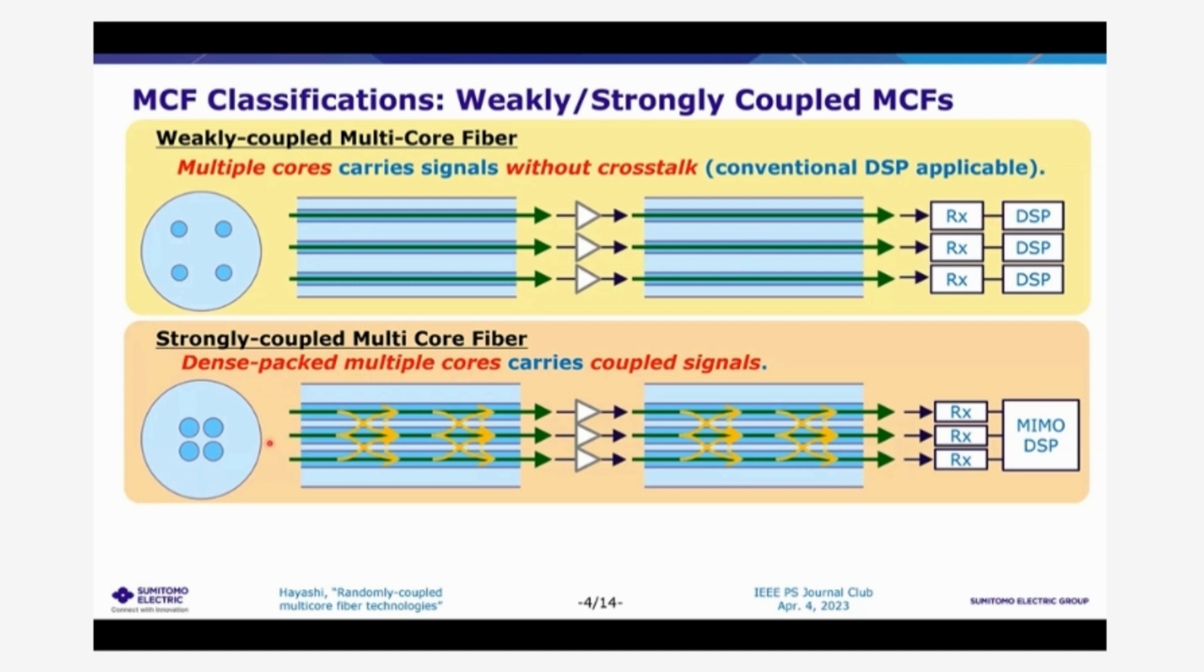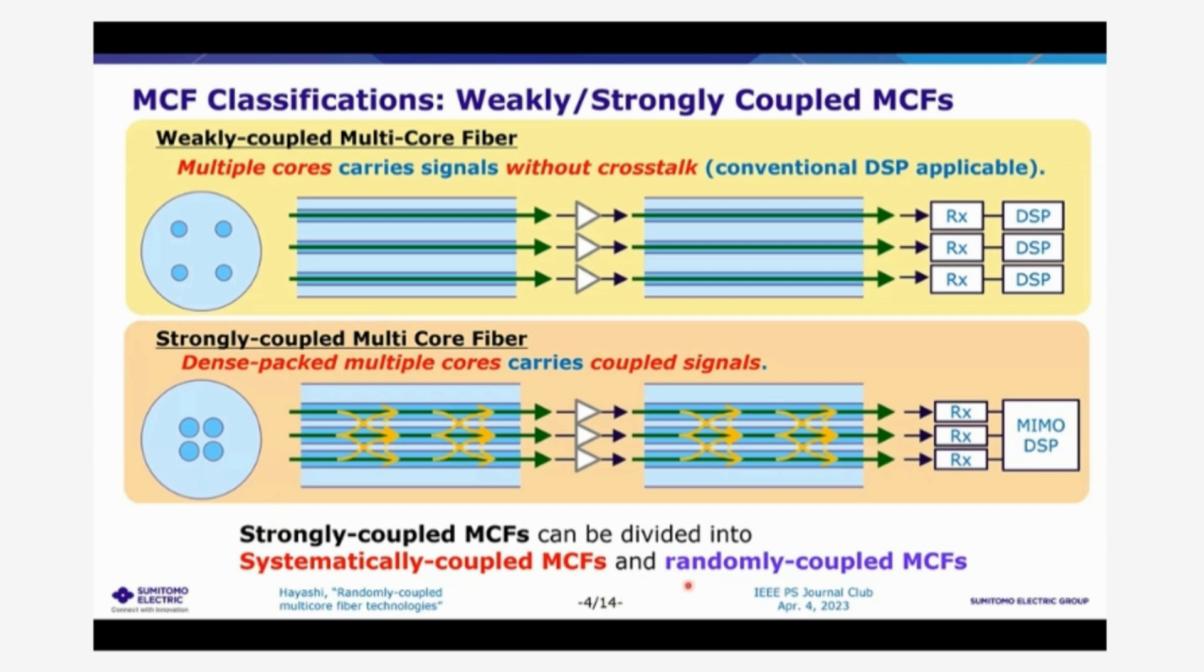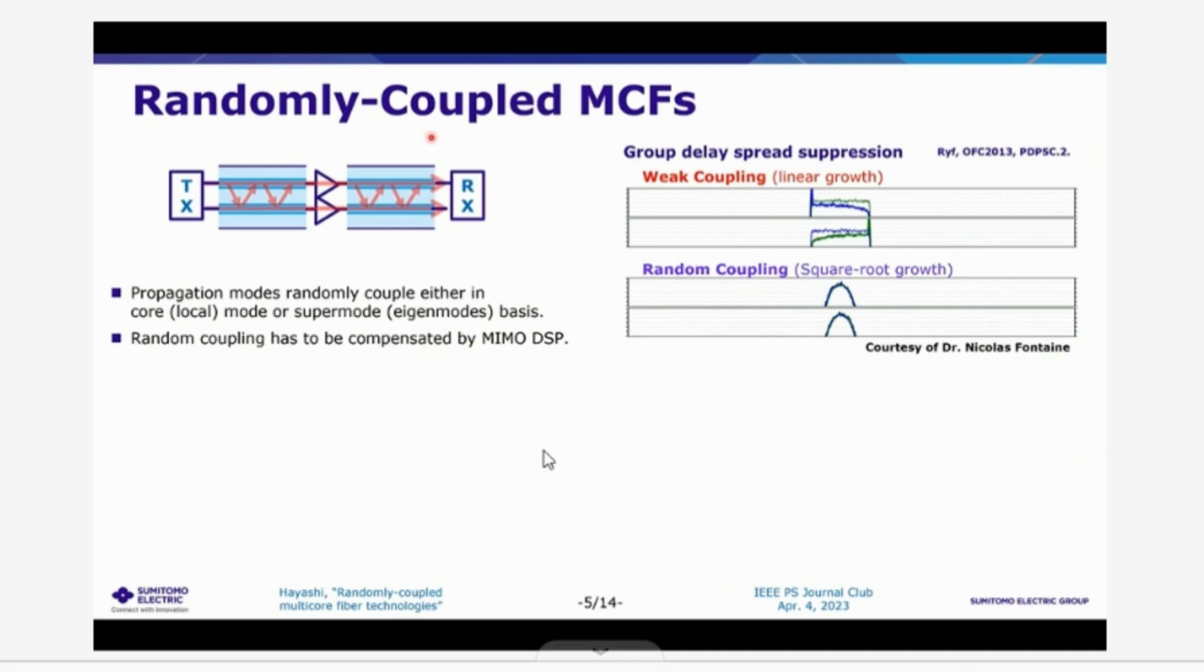In the strongly coupled multicore fibers, the cores are more tightly packed in the cross section of the fiber. So in such fiber, signals are mixed between the cores and such a mixing has to be undone in the receiver side by multiple input, multiple output digital signal processing. And this strongly coupled multicore fiber can be further divided into systematically coupled fibers and the randomly coupled multicore fibers.